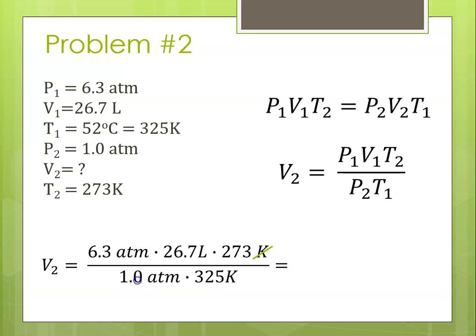Let's cross out units. Kelvin cancels out. Atmospheres cancel out. We're going to plug in 6.3 times 26.7 times 273, divided by 1, divided by 325. So you have to hit divide twice. That comes out to, on my calculator, 141.29 liters.